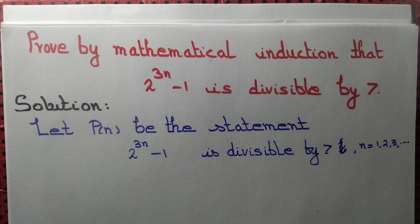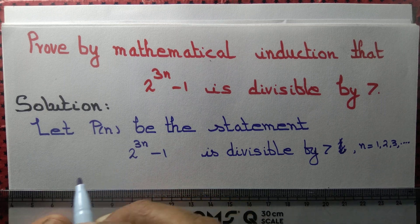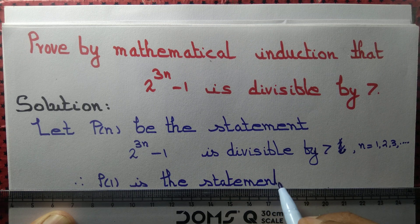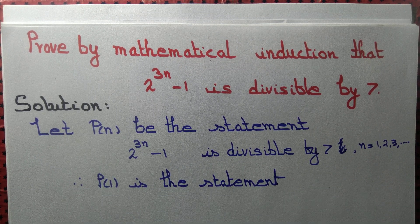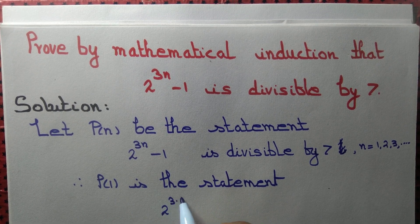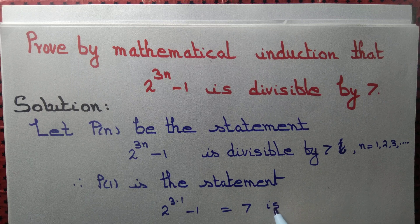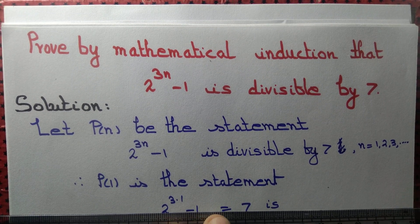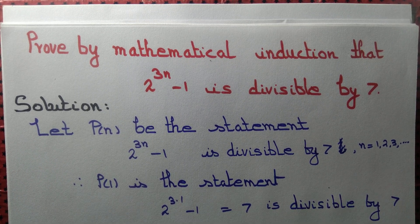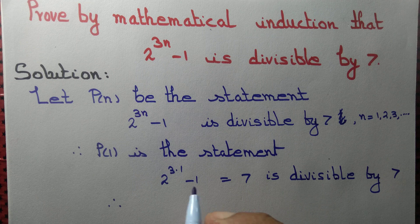The first step of mathematical induction involves initialization or starting. We will start with n equal to 1. Therefore, P(1) is the statement: 2 to the power 3 into 1 minus 1 equals 2 cubed, which is 8. And 8 minus 1 is 7, which is divisible by 7. In mathematical induction, the starting point must be true. Therefore, P(1) is true.